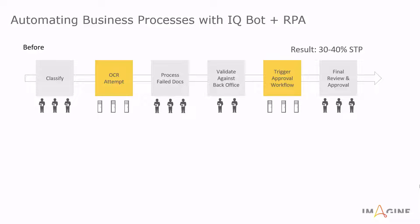This is the typical process before, which results in about 30% to 40% straight-through processing. People have to classify documents and sort them out. Then they go through an OCR attempt, and processing failed docs requires people to look at the documents and determine whether it was a good scan or not. Then they validate the outputs of those documents through the back office, and after those two manual processes, go back to automation to trigger the approval workflow, with people at the end finalizing that review.